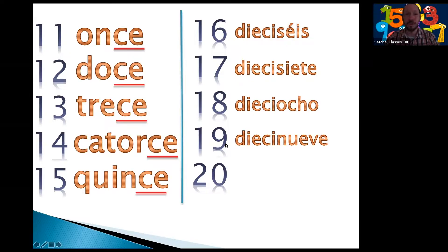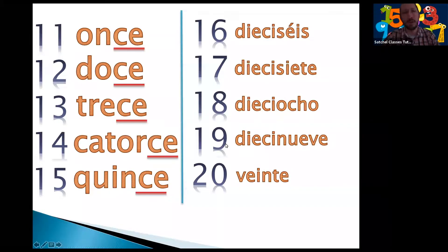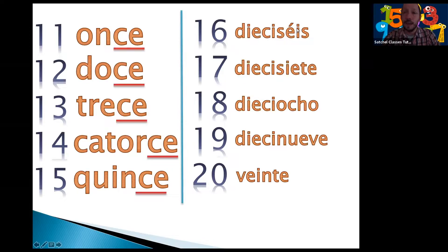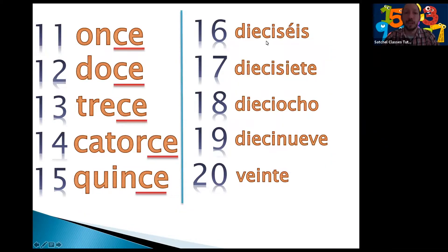From then onwards we have the word for 20, which is veinte. These numbers require a lot of practice because we have this combination of 'ie' or 'ei.' My suggestion is always practice the sound first before trying the actual word — for example 'ie, ie, ie' and then you'll be able to do 'die, die, die.' These words with so many vowels like I and E tend to be very confusing for English speakers, so always do it slowly first and then increase your speed.